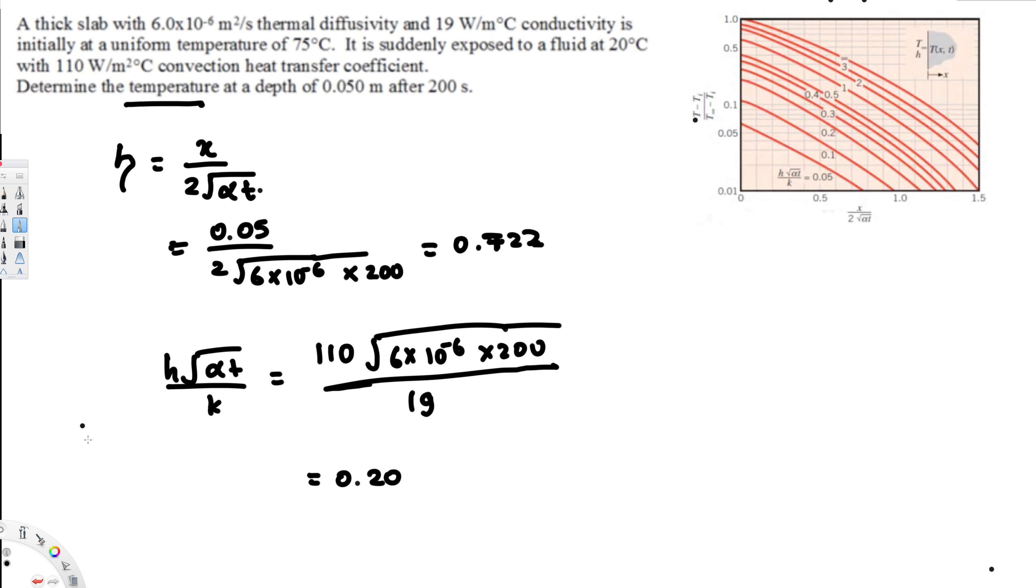Now all we have to do is look at this diagram and see where this is going to be. First let's start with the similarity variable. So this is 0.722.